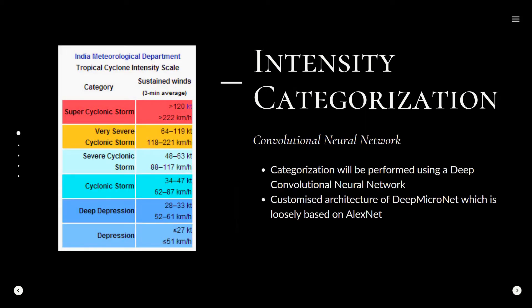From the precise cyclonic region, we move to estimating its intensity. IMD has set a scale for classifying cyclones by wind speed readings, and we train our CNN to classify cyclones based on those categories. For the architecture, we refer to the findings of a deep macro architecture specifically built for classifying cyclone intensity. We will further experiment with smaller kernel sizes in the initial layers to pick up subtle details like sharp edges, spiral arms, and the growing size of tropical cyclones.